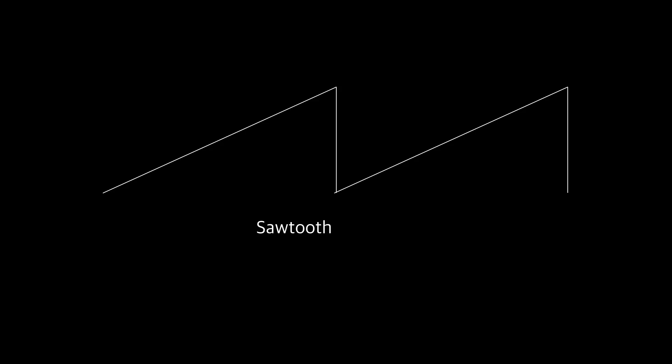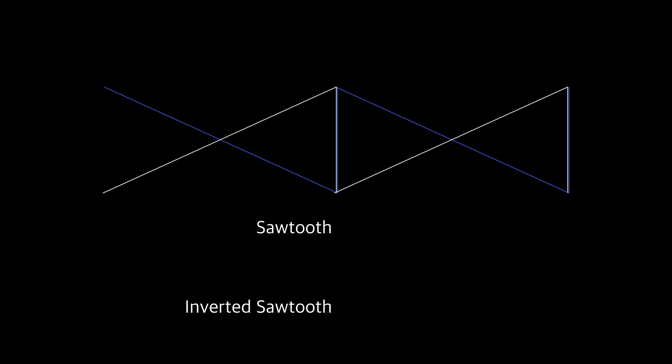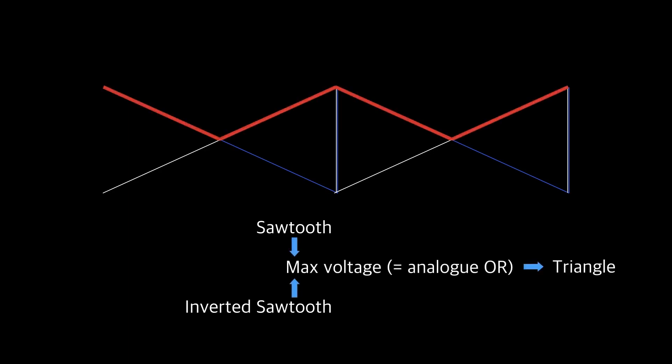If you compare a sawtooth to its inverted copy, you'll notice that when you follow whichever voltage is higher, you'll get a triangle wave. In modular terms this is known as taking the maximum, or sometimes an analog OR function, for complicated mathematical reasons. And it sounds obscure, but you'll probably have a module that can do it.